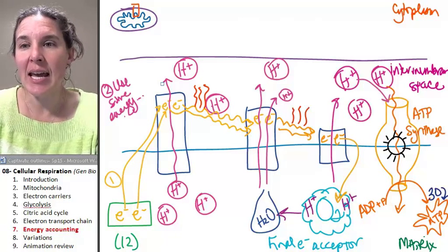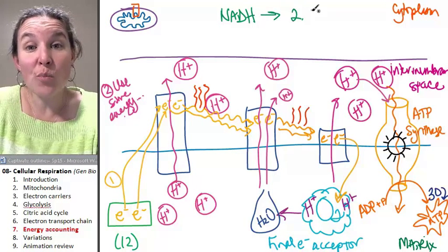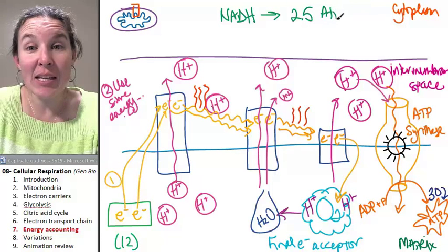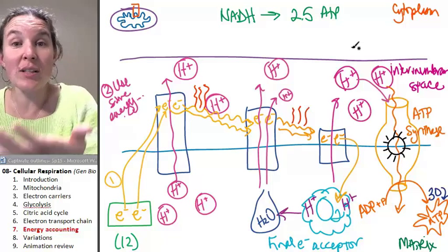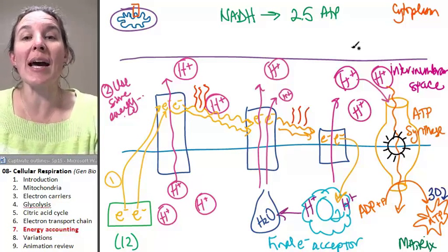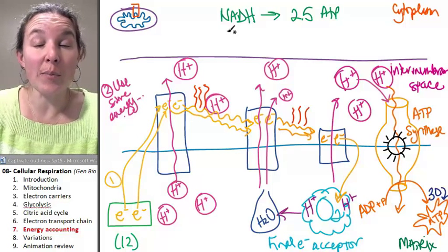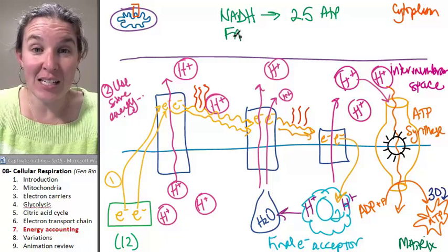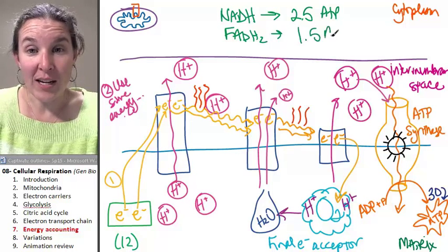What they've seen is that if you have an NADH, you get about 2.5 ATPs from that. From the energy in the electrons carried by NADH, you'll produce about 2.5 ATPs. From the energy carried by an FADH2, it's about 1.5 ATPs.